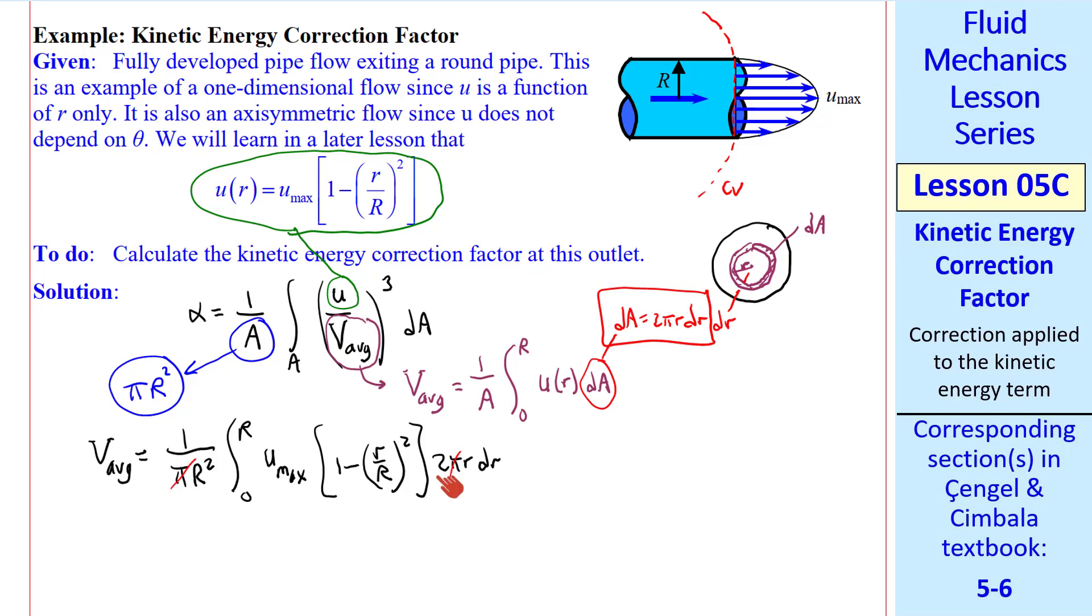The π's cancel. The 2 and the u_max are constants, which we can bring outside the integral. So we have 2u_max over R², integral 0 to R, and then we multiply these terms by r. So we get r minus r³ over R² dR. This is a simple integral, the first term is just r² over 2, the second term is r⁴ over 4R²,